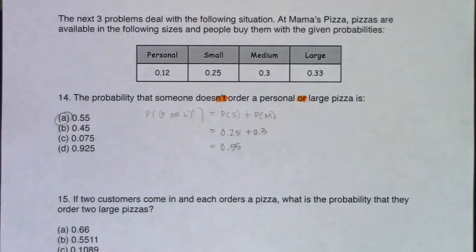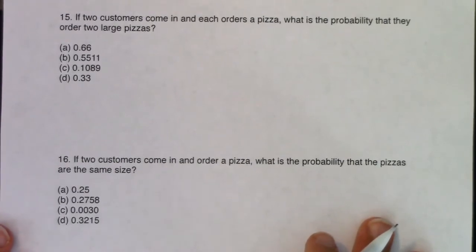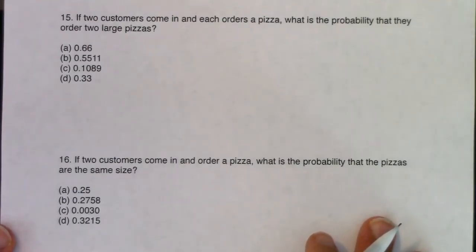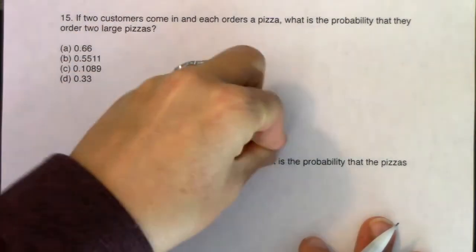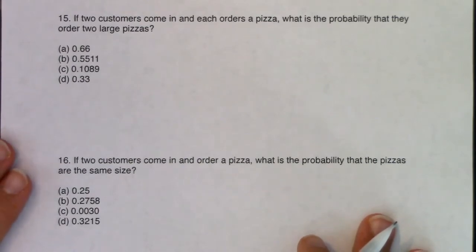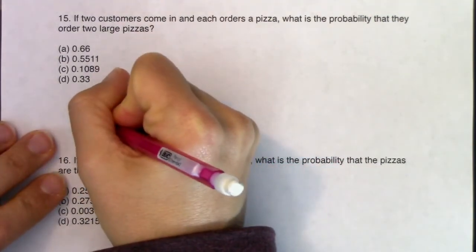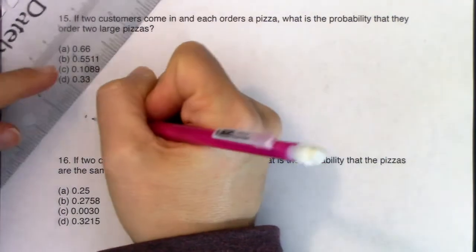This says: If two customers come in and each orders a pizza, what is the probability that they will order two large pizzas? So we've got two successive customers. When I hear that, that sounds like a tree diagram, because we've got the first customer making the order and then the second customer making the order. I'm going to draw a tree diagram. I'm going to need a lot of room because there's going to be a lot of branches, so I'm going to do this one by hand.